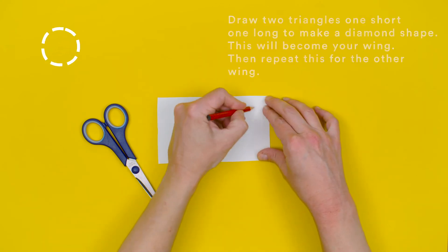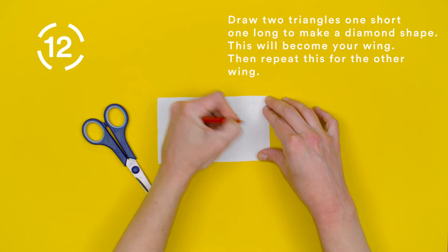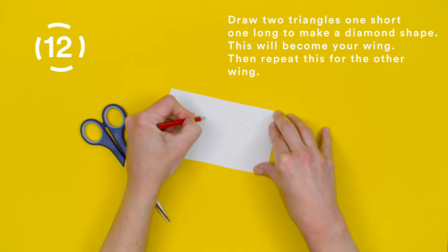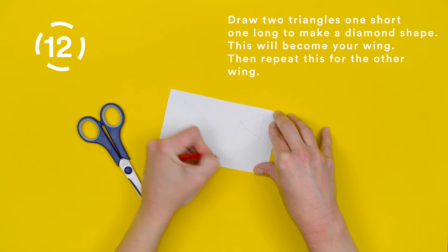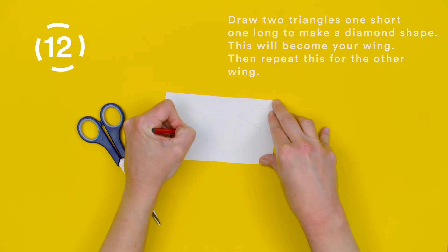Step 12. Draw two triangles, one short and one long to make a diamond shape. This will become your wing. Then repeat this for the other wing.